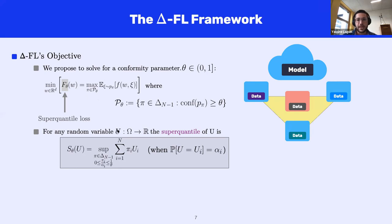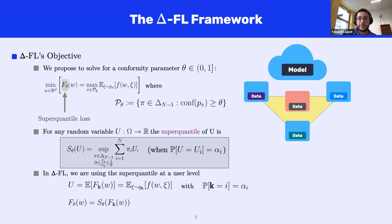More generally, for any discrete random variable U taking values u_i with probability alpha_i, the superquantile is the supremum of weighted sums of U's values for weights satisfying two constraints: belonging to the simplex, and satisfying a box constraint. The superquantile is known under different names: conditional value at risk, average value at risk, tail value at risk, or expected shortfall. In our case, U takes n values which are the expected losses of the n client devices — the index k takes value i with probability alpha_i. Hence, what we minimize in Simplicial FL is the superquantile of this random loss.